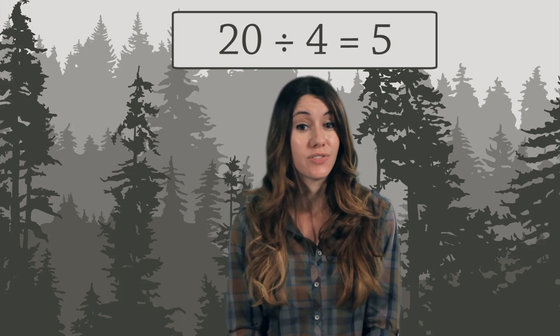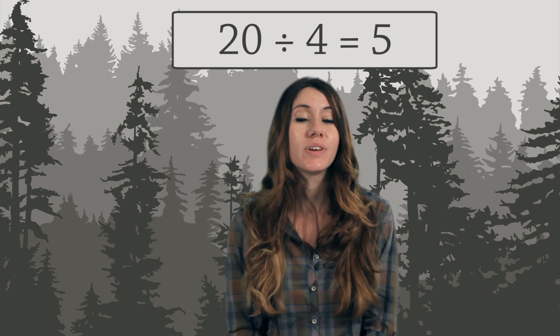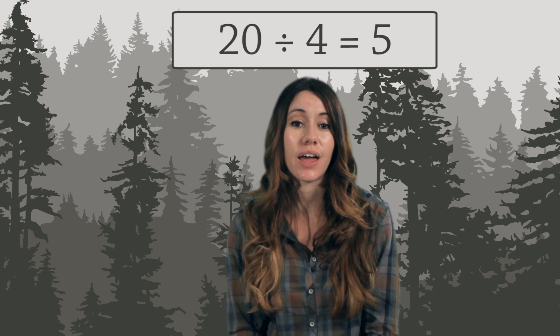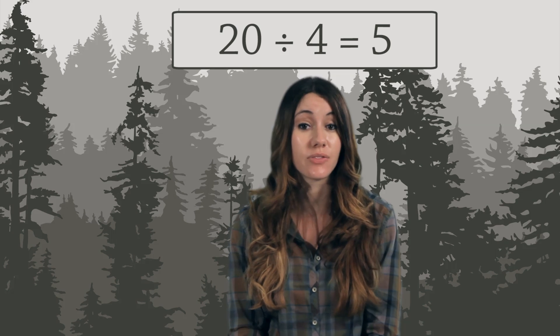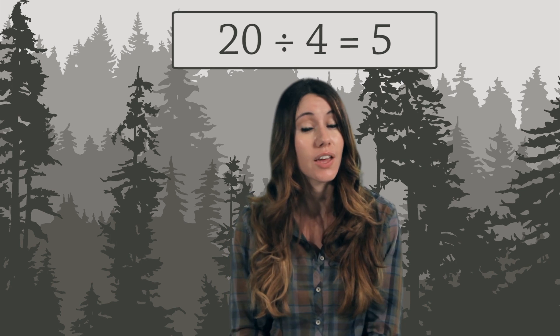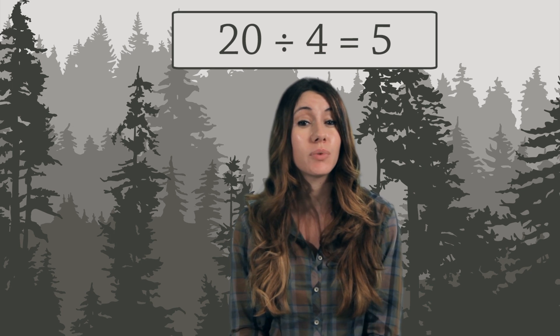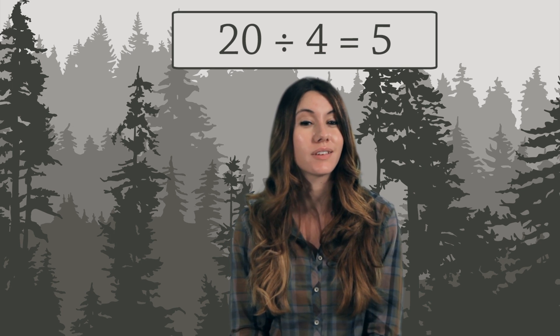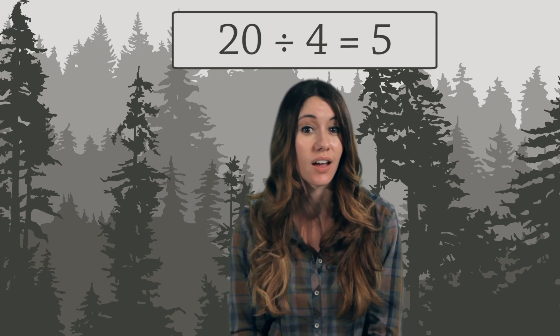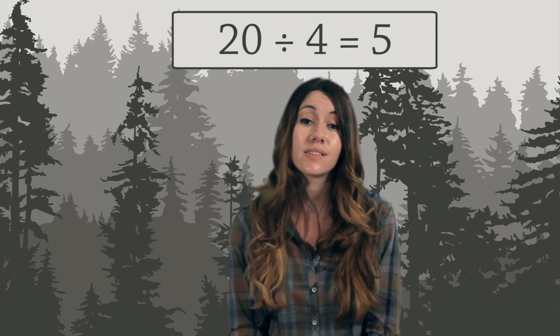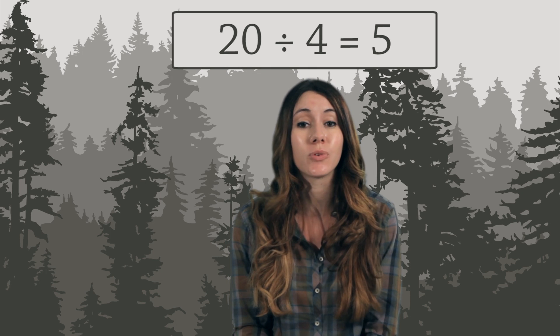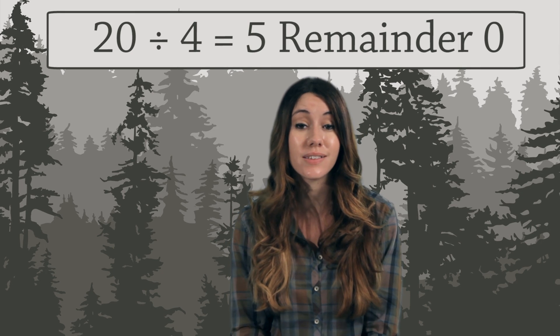This is how we write the division. We say it aloud as 20 divided by 4 equals 5. That symbol with two dots is called the division sign. Since there were no marbles left over, we say the remainder is zero.